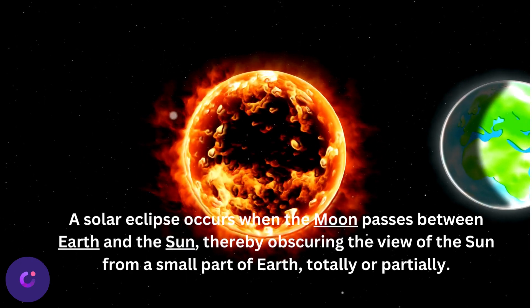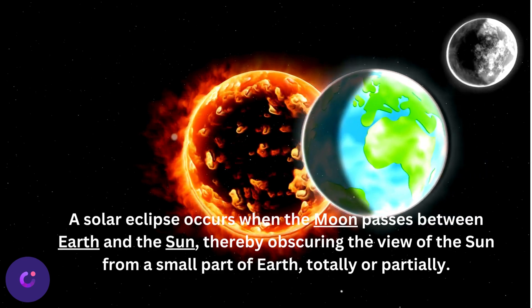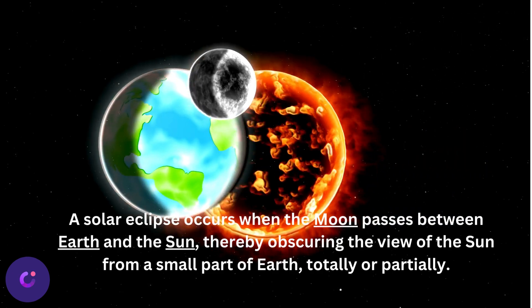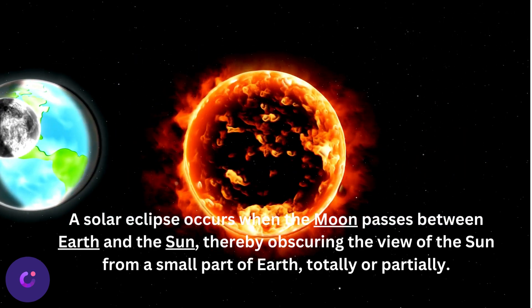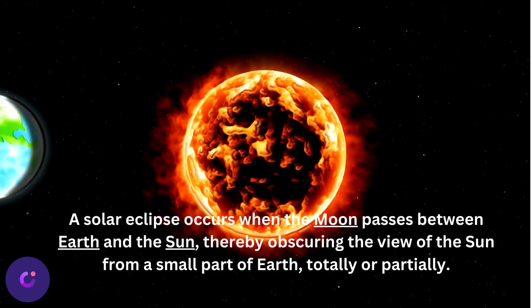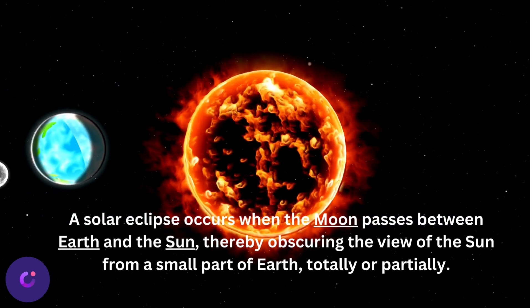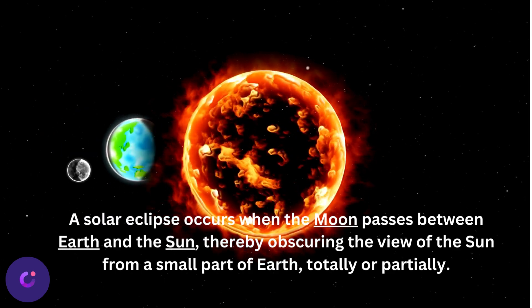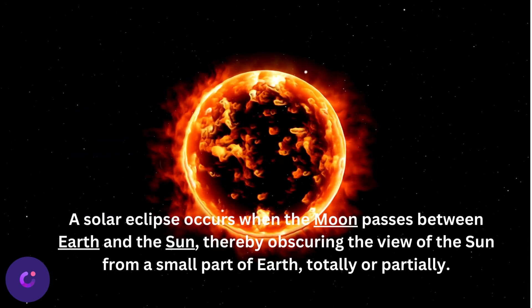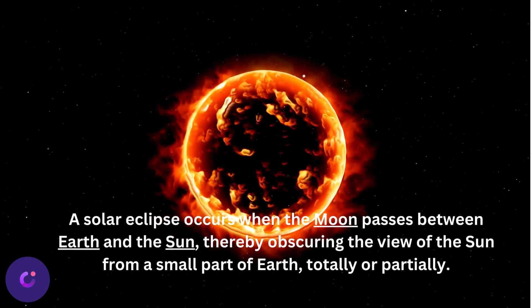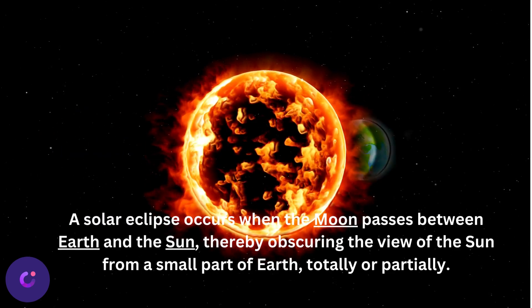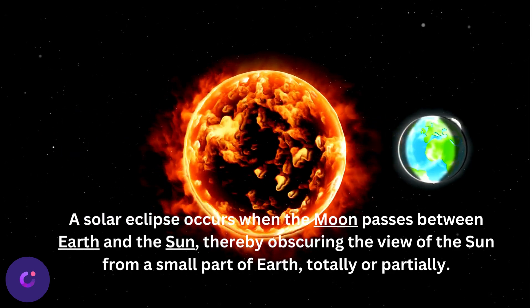A solar eclipse occurs when the moon passes between earth and the sun, thereby obscuring the view of the sun from a small part of earth, totally or partially.